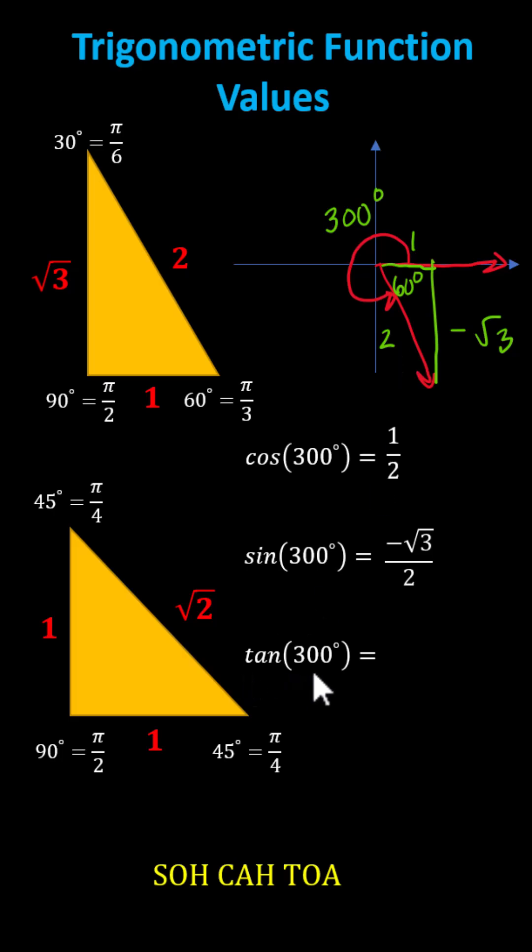And tangent 300 degrees equals the ratio of the opposite side to the adjacent side, which is negative square root of three divided by one, which simplifies to negative square root of three. I hope you found this helpful.